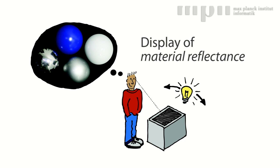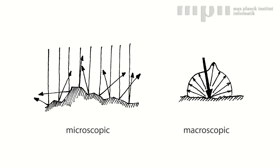In this paper we deal with the challenge of physically displaying the reflectance of materials and its variation with illumination and viewing angle. Reflectance is often explained through microgeometry.